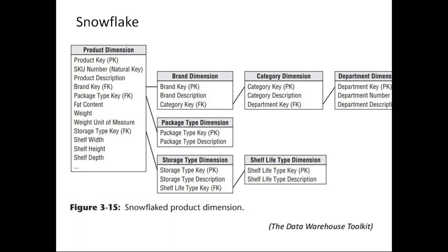To avoid that, the snowflake design gives you more efficient storage as well as more efficient maintenance. This kind of structure is more efficiently maintained as well — if your brand description changes, you only need to go to the brand dimension table and update it once, instead of updating it for 10 records in the product dimension table. So anything that changes needs to be updated only once in the sub-table and not in the master table multiple times. That makes maintenance a lot easier, which is why we have the snowflake design.